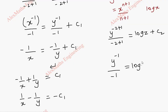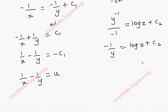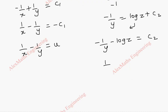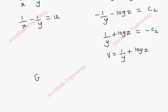This gives minus 1 by y equal to log z plus c2. Taking the log z term across, minus 1 by y minus log z equal to c2. This is our v: v equals 1 by y plus log z. Using u and v, the general solution is f(u, v) equal to 0.